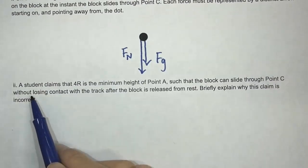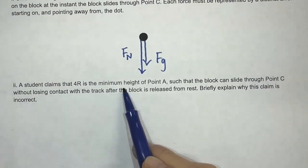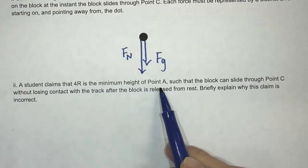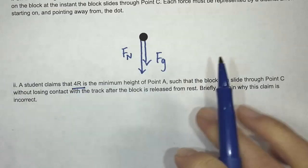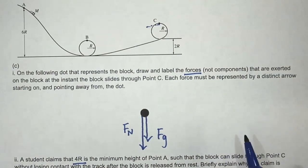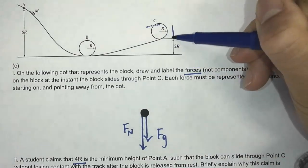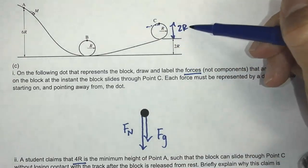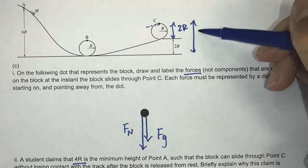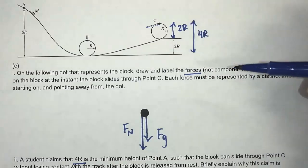Last question here. A student claims that 4R is the minimum height of point A. Now, why would they say 4R? If you take a look at the situation here, this is 2R and that's 2R, right, so this total would be 4R.